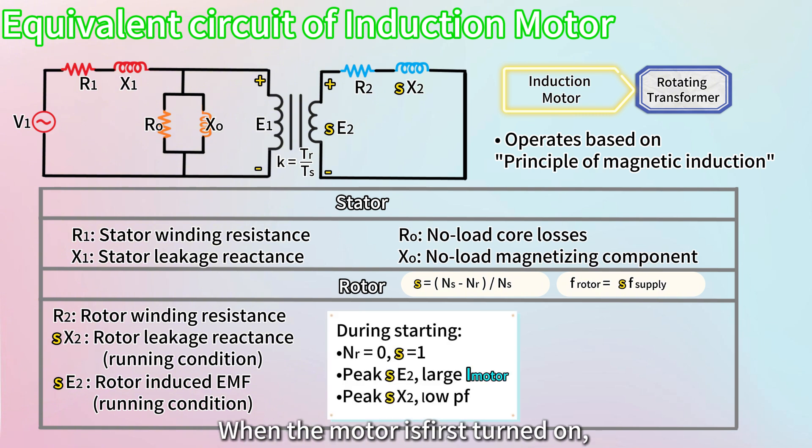When the motor is first turned on, the rotor isn't moving yet, so the slip is at one. At this point, the induced EMF and leakage reactance in the rotor are at their peak because the relative motion between the stator's rotating magnetic field and the stationary rotor is the greatest.